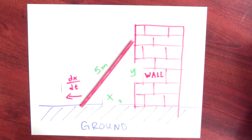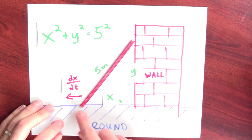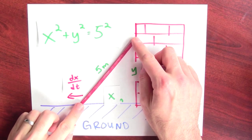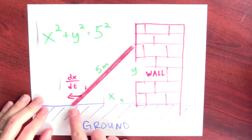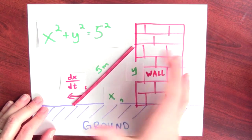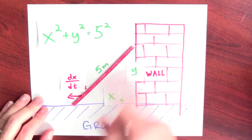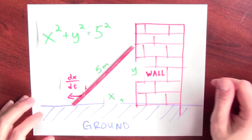So now I've labeled everything on my picture. So the equation here is just x squared plus y squared equals 5 squared, because this ladder, even as it slides down the side of the wall, it still makes a right triangle with this leg, this leg, and this is the hypotenuse. And the length of the ladder doesn't change. It's always 5 meters long. So the Pythagorean theorem tells me that x squared plus y squared is 5 squared.